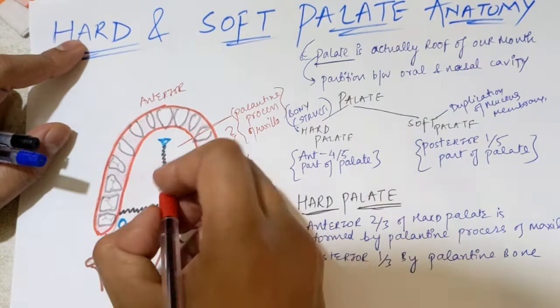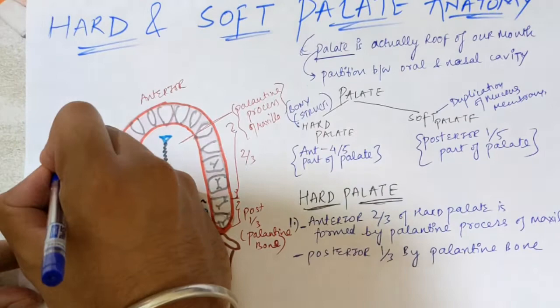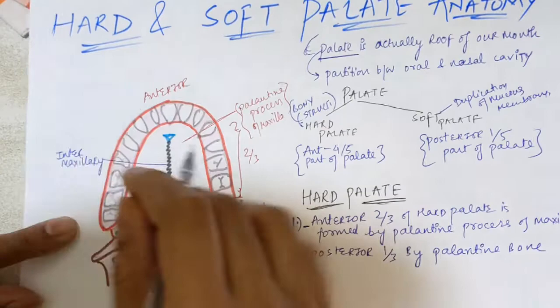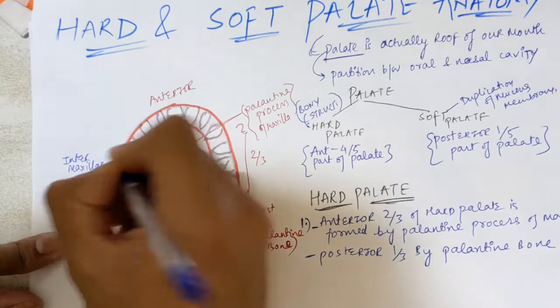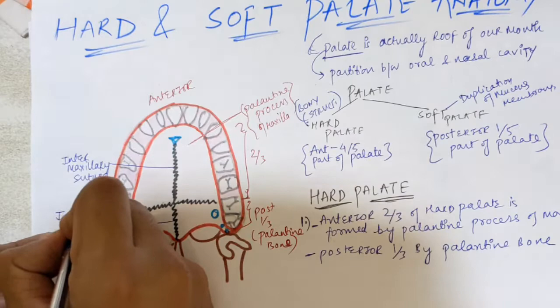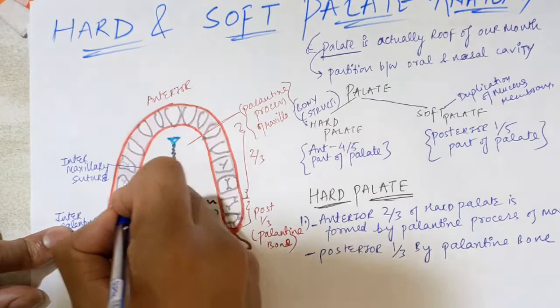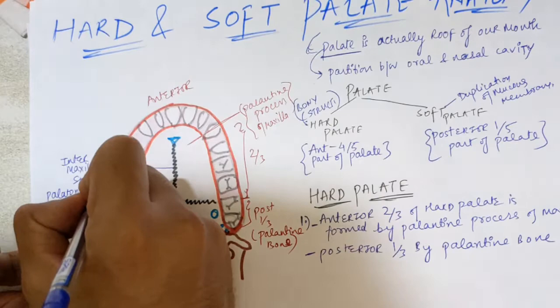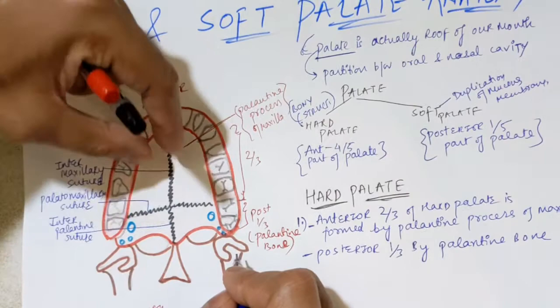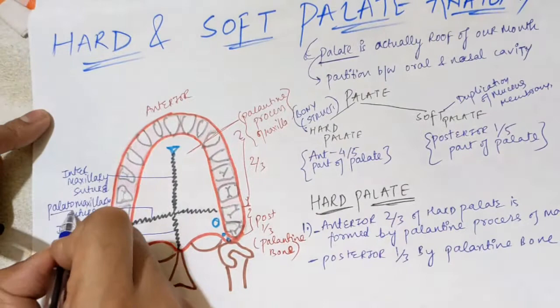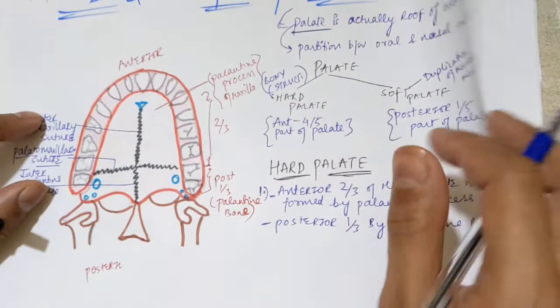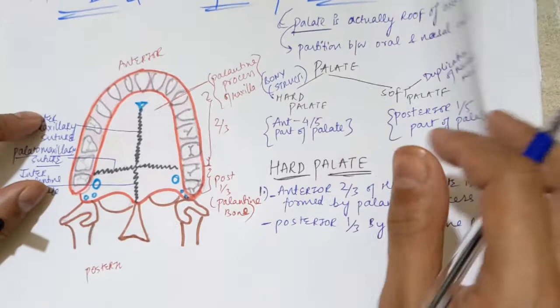You can see sutures in this diagram. The center suture is the intermaxillary suture, present between the two maxilla bones. The next one is the interpalatine suture, present between the palatine bones. The transverse suture is the palatomaxillary suture, present between the palatine process of the maxillary bone and the palatine bone — that is why it is named palatomaxillary suture.